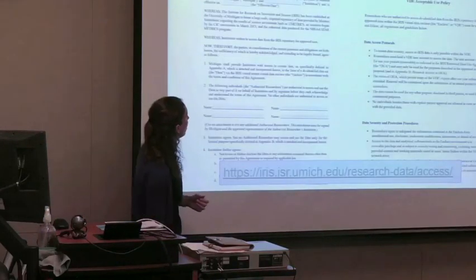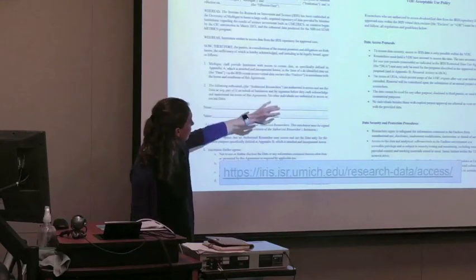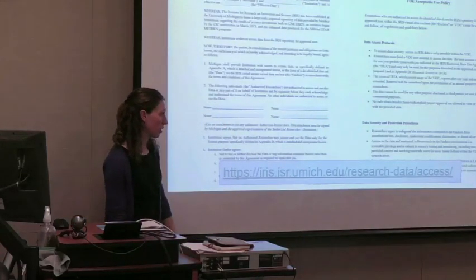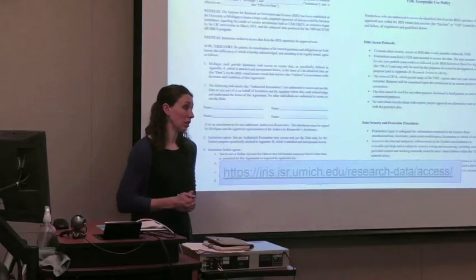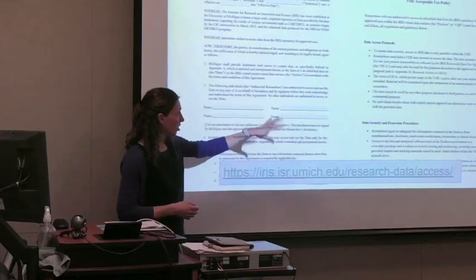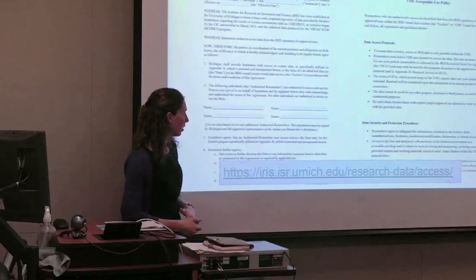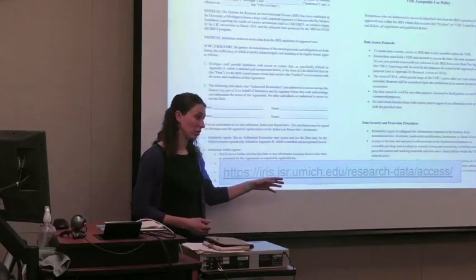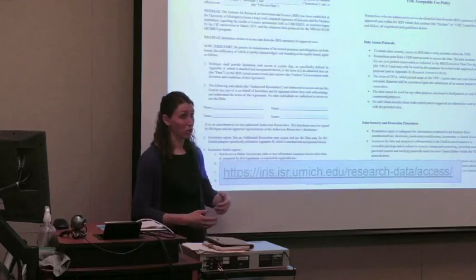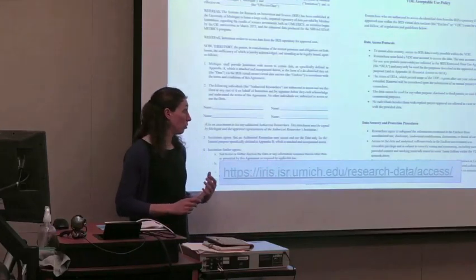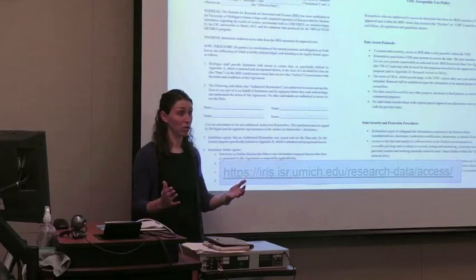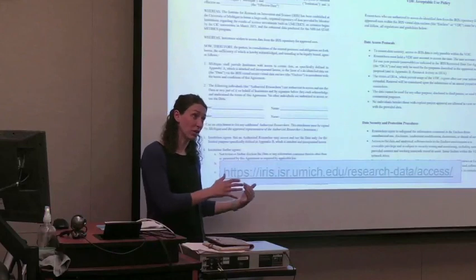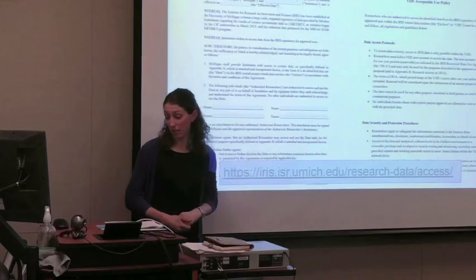The documents I mentioned — the data use agreement at the institutional level and the use policy at the individual level — are linked on our data access page on our website, which walks you through the whole process of what it takes to access data at IRIS. There is also a seat fee associated with research access for IRIS if you are not at a member institution — it's a benefit of membership to have free research access. Anyone affiliated with the University of Michigan has free access. Our data release is a standalone annual release, which provides version stability so researchers always know which version they're citing when they publish.